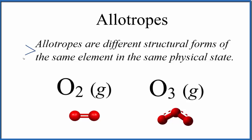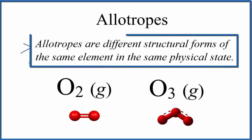So we have a definition for allotrope and then we have these two substances: diatomic oxygen gas and ozone gas. Based on this definition, pause and figure out are these allotropes?